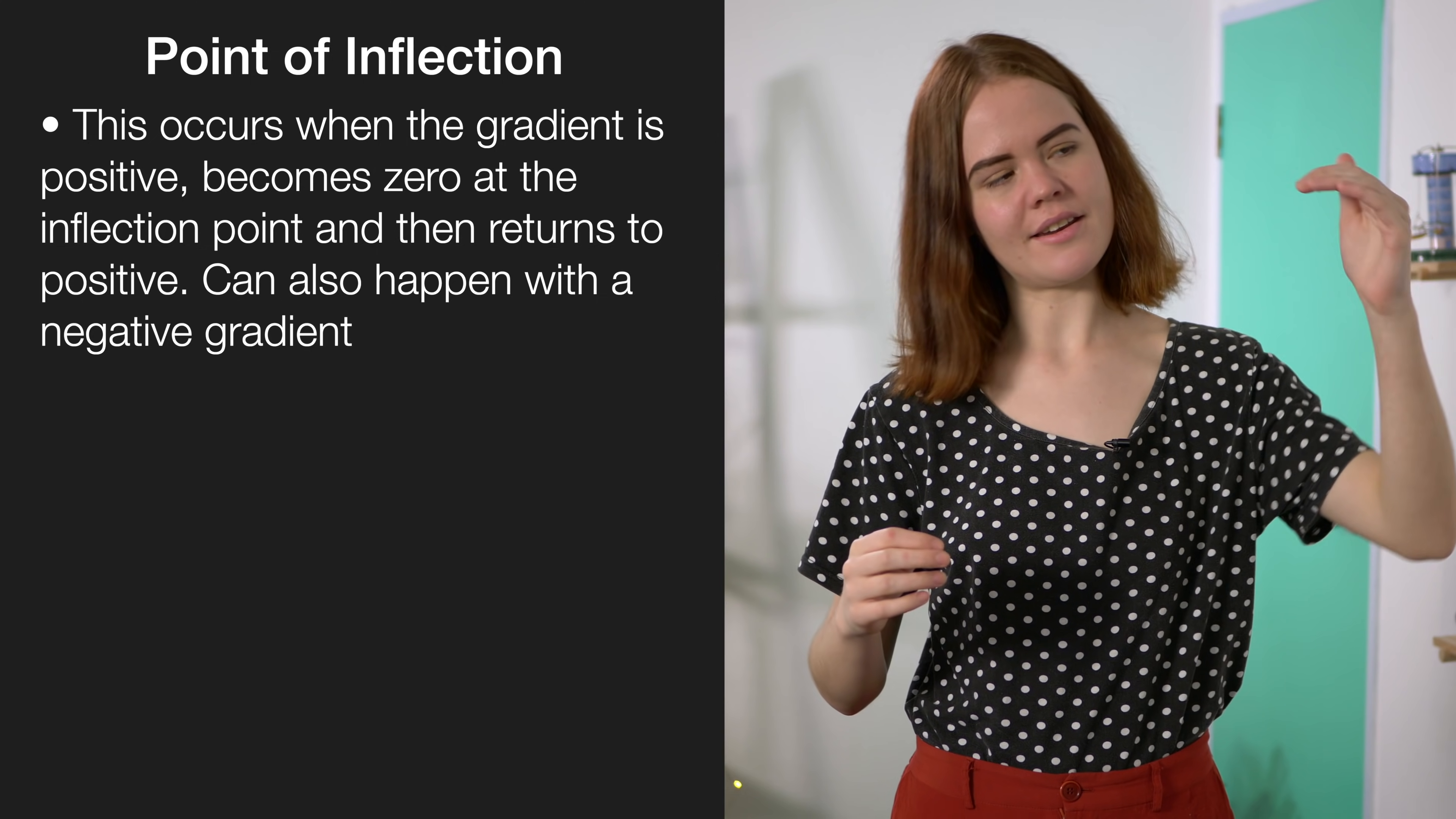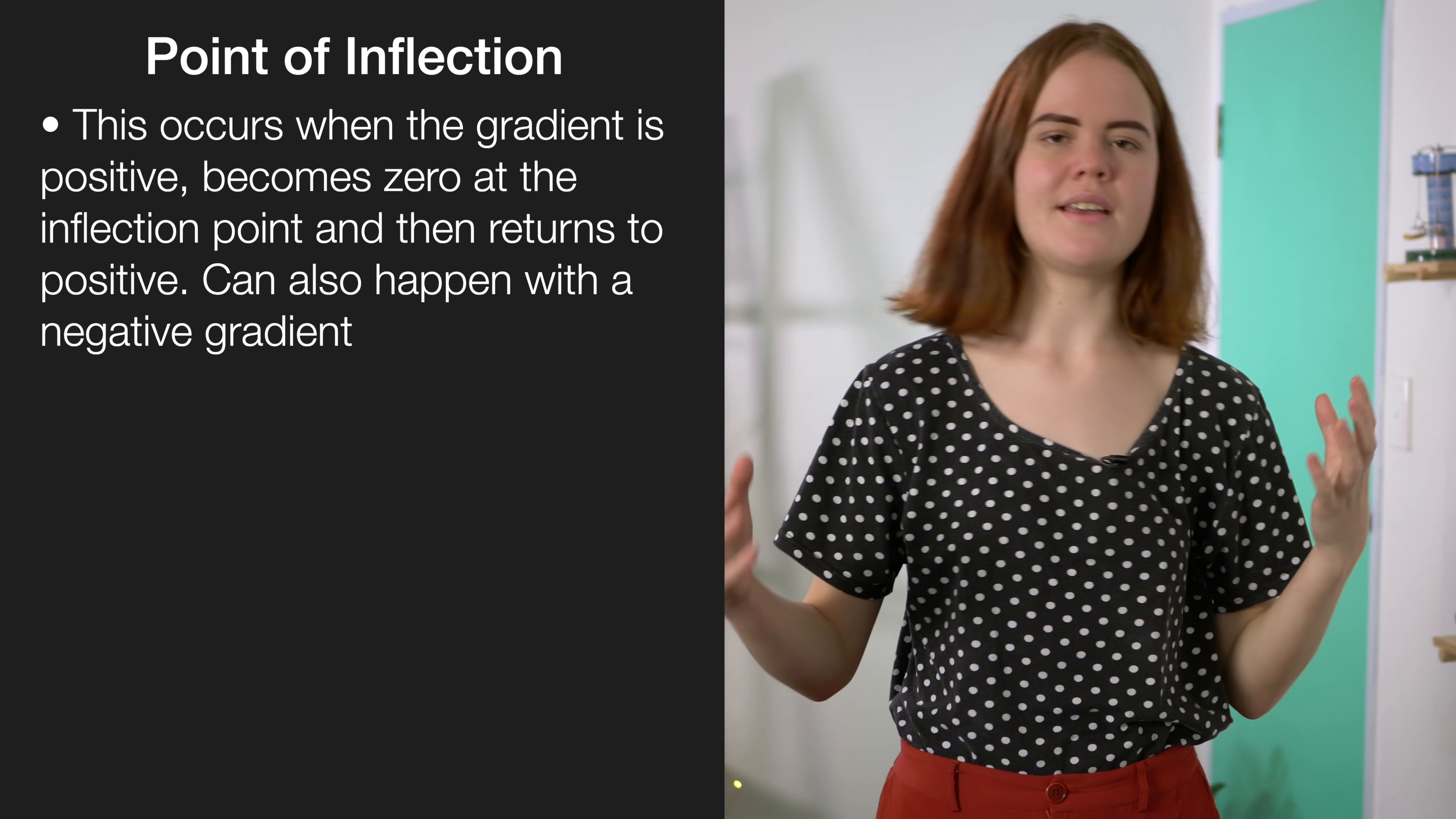We should also mention that there's a third option for when the gradient is negative, and this is called a point of inflection. This is when the graph is going up, and then it goes flat, and then it goes up again, or you could get a negative equivalent.